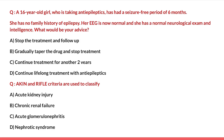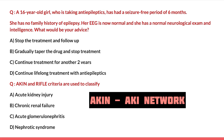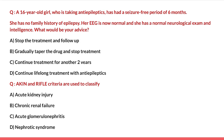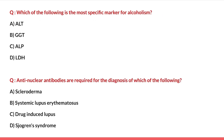Next question: AKIN and RIFLE criteria are used to classify which of the following — acute kidney injury, chronic renal failure, acute glomerulonephritis, or nephrotic syndrome? AKIN stands for AKI Network classification, and RIFLE stands for Risk, Injury, Failure, Loss, and End-stage. Both are criteria to classify acute kidney injury. Hence the answer is option A: acute kidney injury.